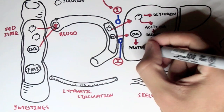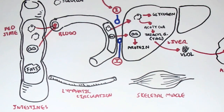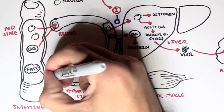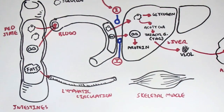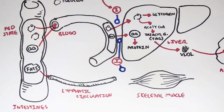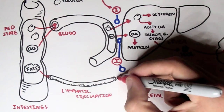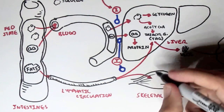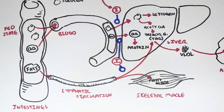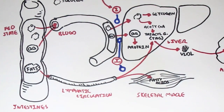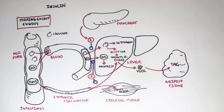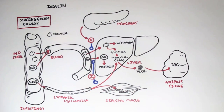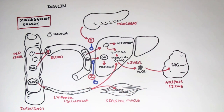Insulin also has an effect on fats, but fats are absorbed through the lymphatic circulation, not through the blood. Insulin will promote the storage of fats within skeletal muscle as fatty acids. Insulin will also promote the synthesis of triacylglycerol from fat in the liver.